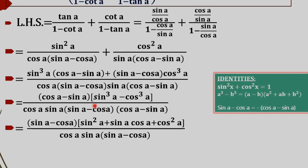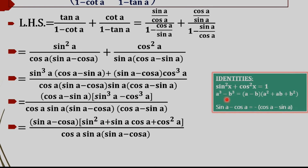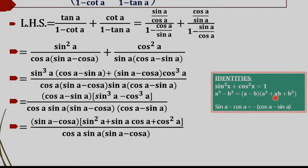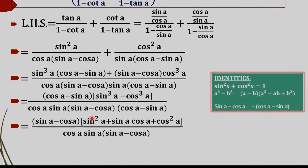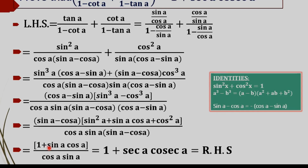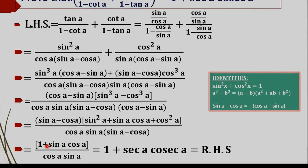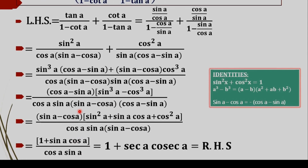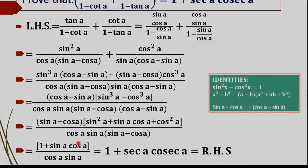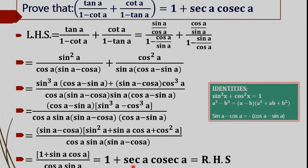Applying the identity, we get (sin A - cos A)(sin² A + sin A cos A + cos² A). We get A - B as (sin A - cos A), A² as sin² A, AB as sin A cos A, and B² as cos² A. The (sin A - cos A) factors cancel again. What remains is (1 + sin A cos A) divided by (cos A · sin A), since sin² A + cos² A = 1. This gives 1/(cos A · sin A) + 1, which equals sec A · cosec A + 1. That is our required RHS.